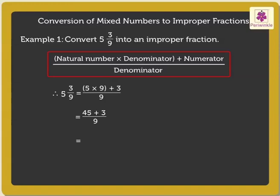Which is equal to 48 upon 9. Thus, 5 and 3 upon 9 is equal to 48 upon 9.